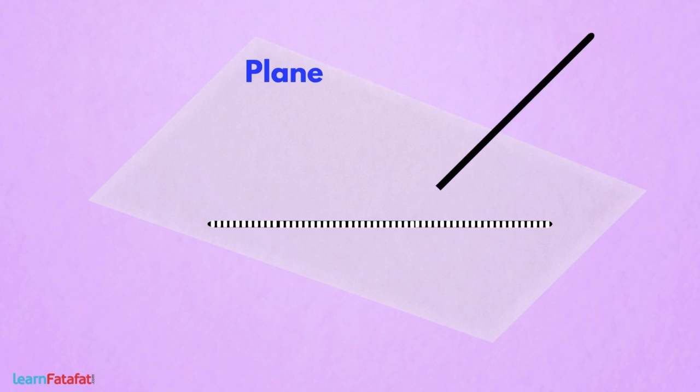Here there is another line. Is it on the plane? No, even if it is touching the plane at a point, still other points are out of the plane. And so this line is not on the plane.